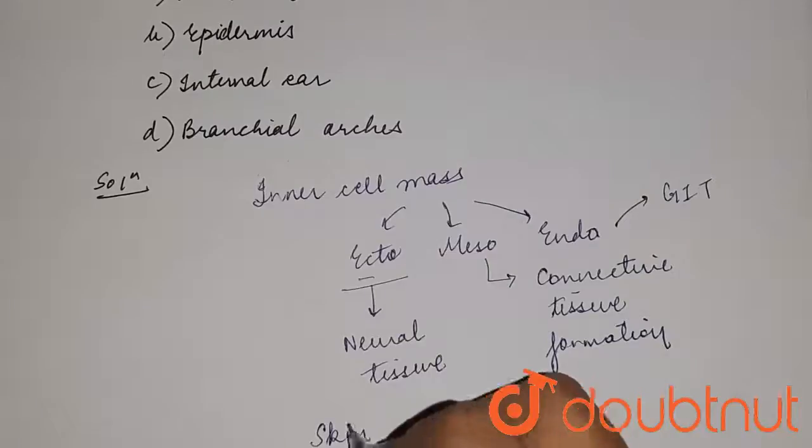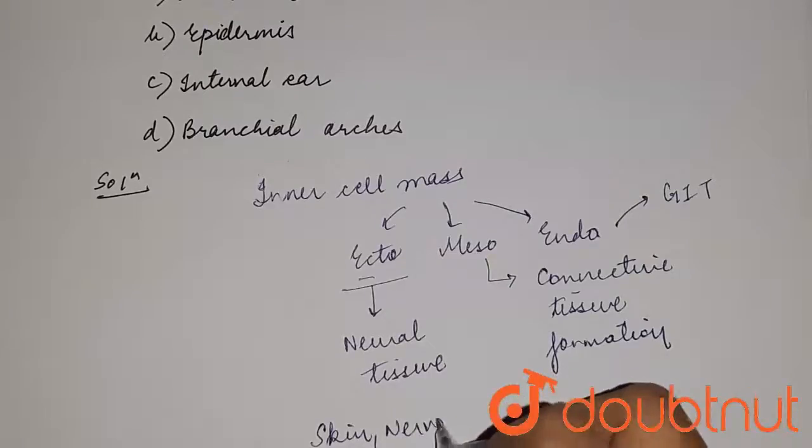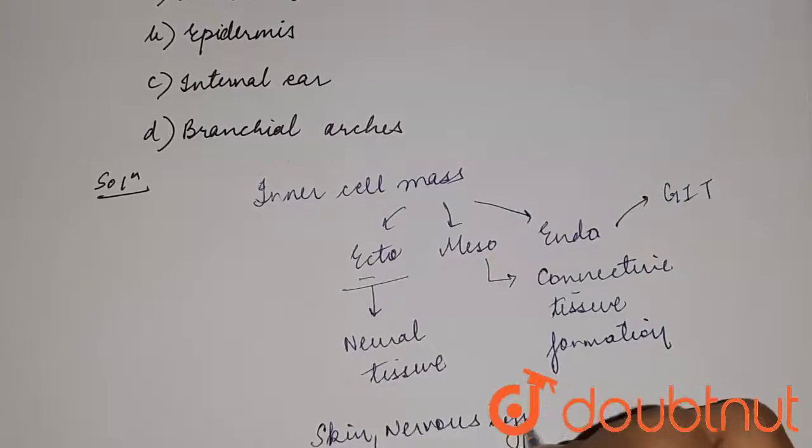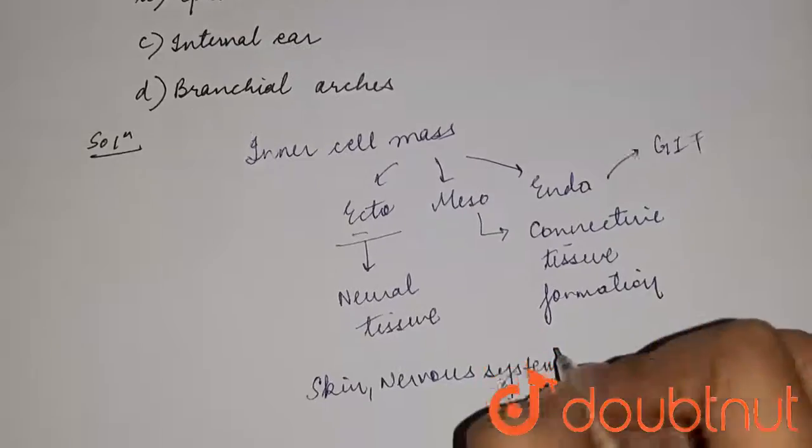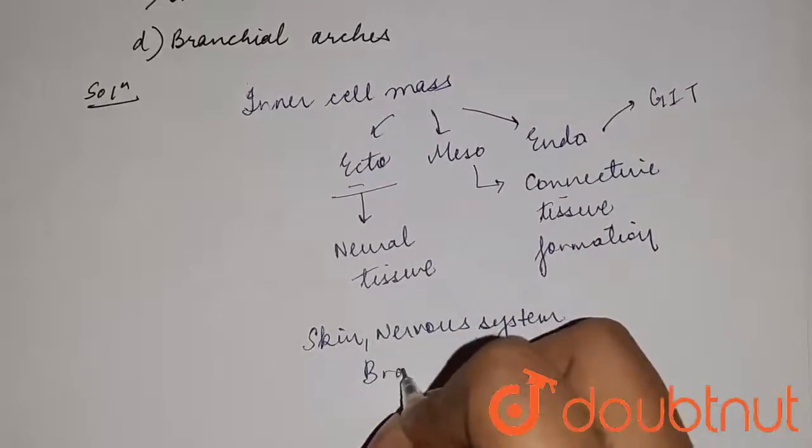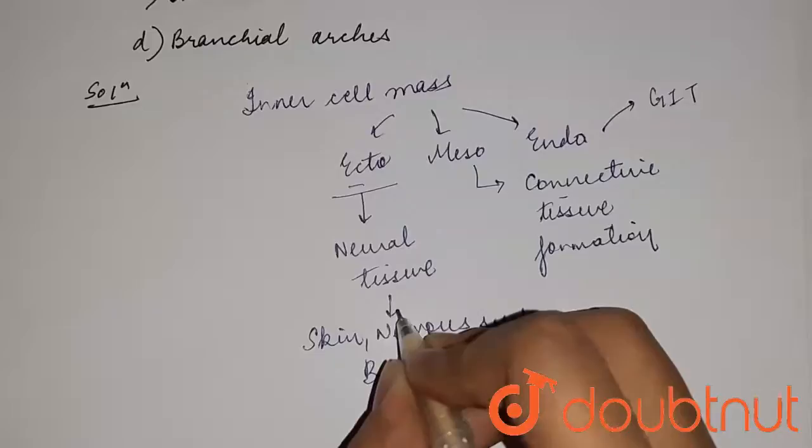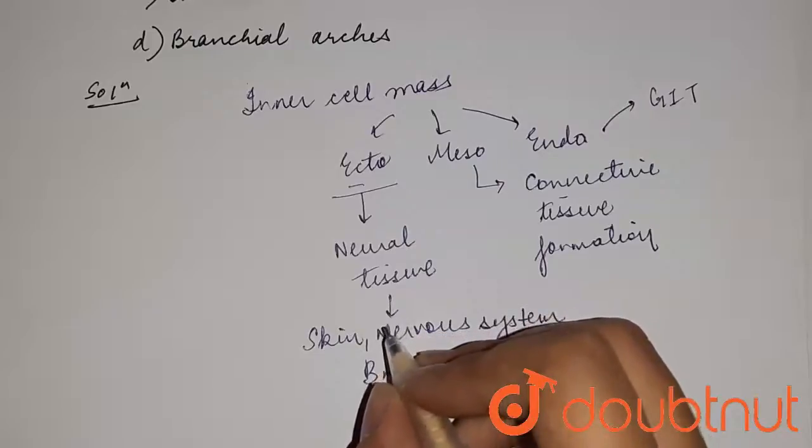skin, nervous system, and brain are formed from the ectoderm. So that means that the notochord, which is